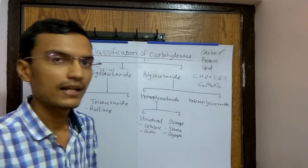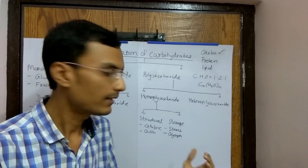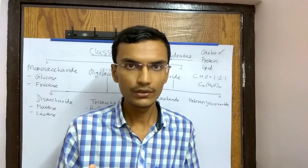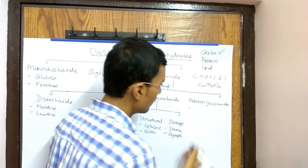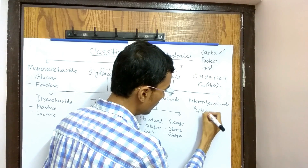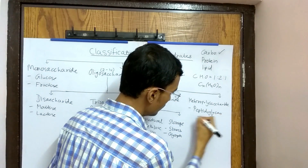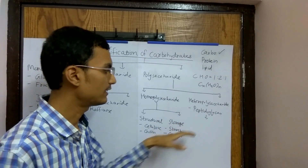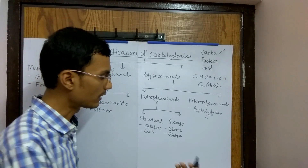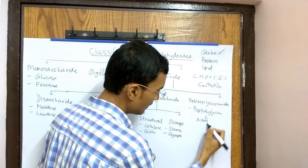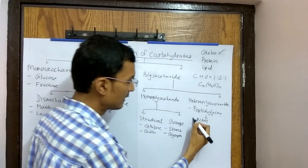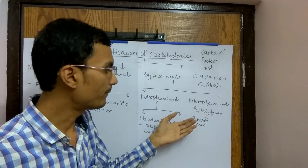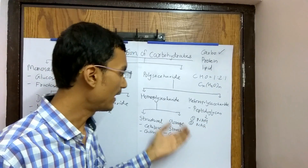In the case of heteropolysaccharide, the repeating unit is not the same — it is different. An example of heteropolysaccharide is peptidoglycan, which is found in the cell wall of bacteria. It is made up of two types of repeating sugar units: first is N-Acetyl Muramic Acid and second is N-Acetyl Glucosamine.